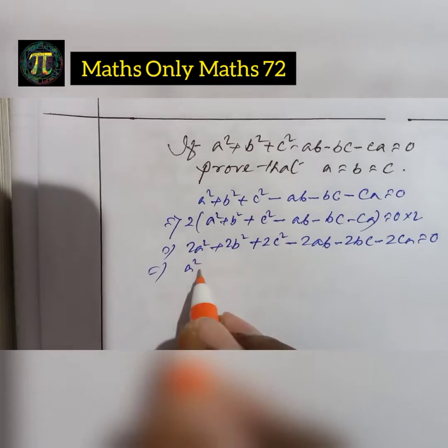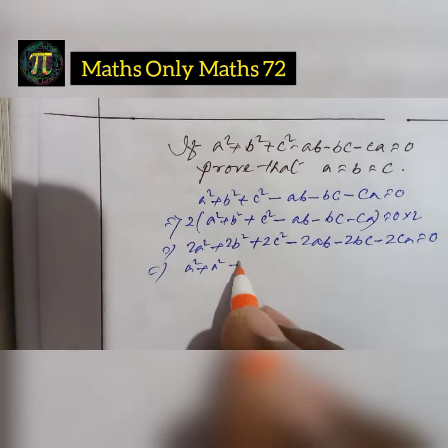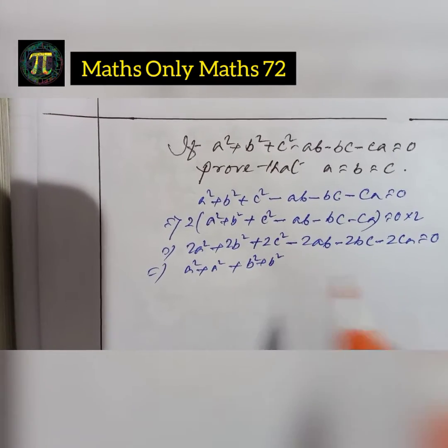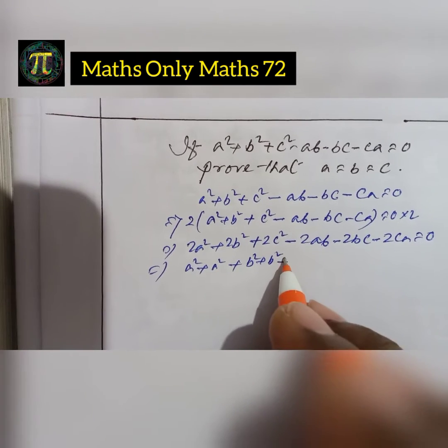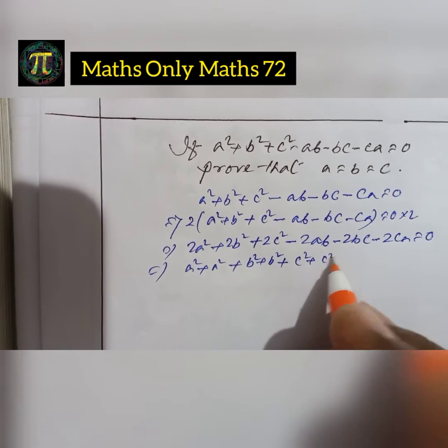Now we break it. 2a² is a²+a². 2b² is b²+b². 2c² is c²+c².